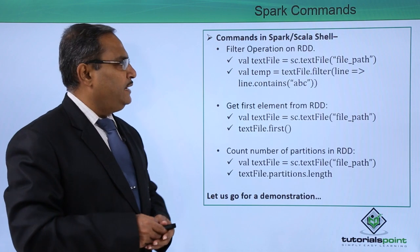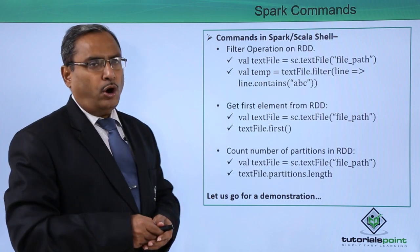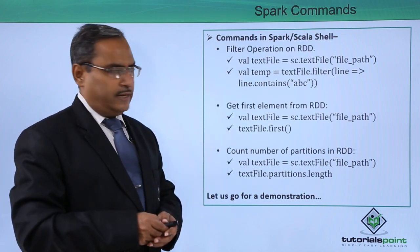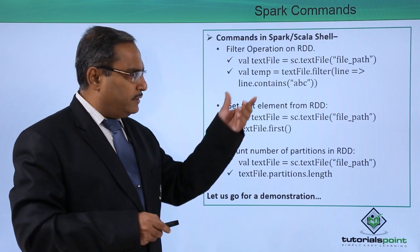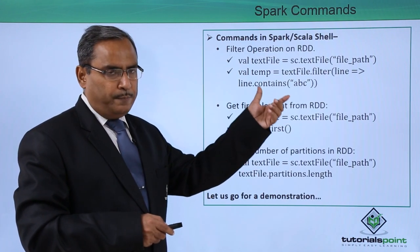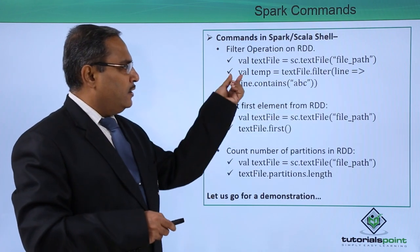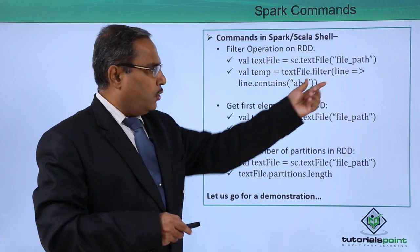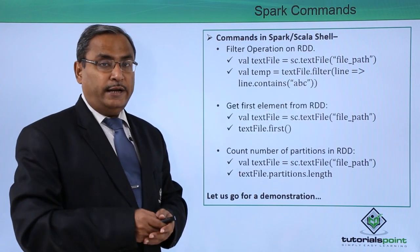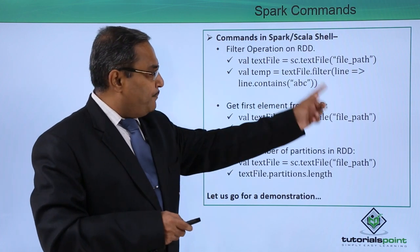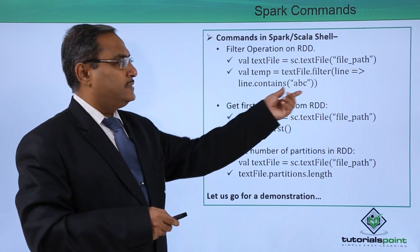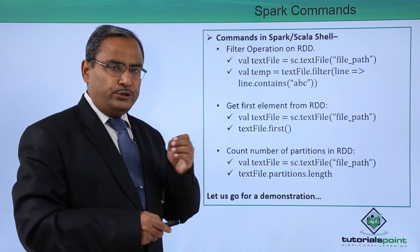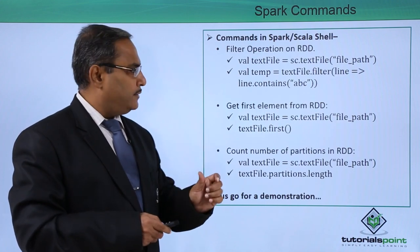For the filter operation on an RDD: val textFile = sc.textFile("file_path"). Then val temp = textFile.filter(line => line.contains("abc")). All lines that contain the text "abc" will be filtered out.